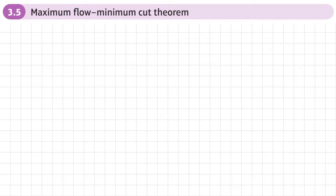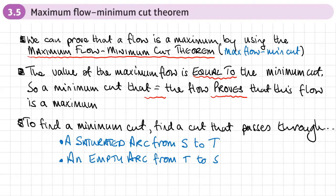This is section five of chapter three on flows in networks, covering the maximum flow minimum cut theorem. This theorem allows us to prove that a flow is a maximum.